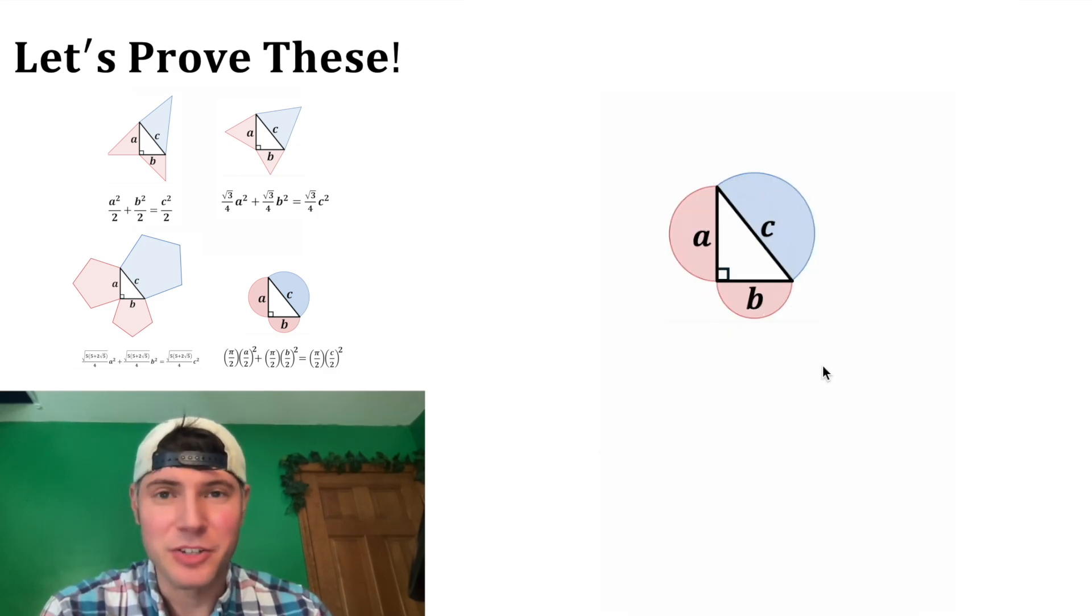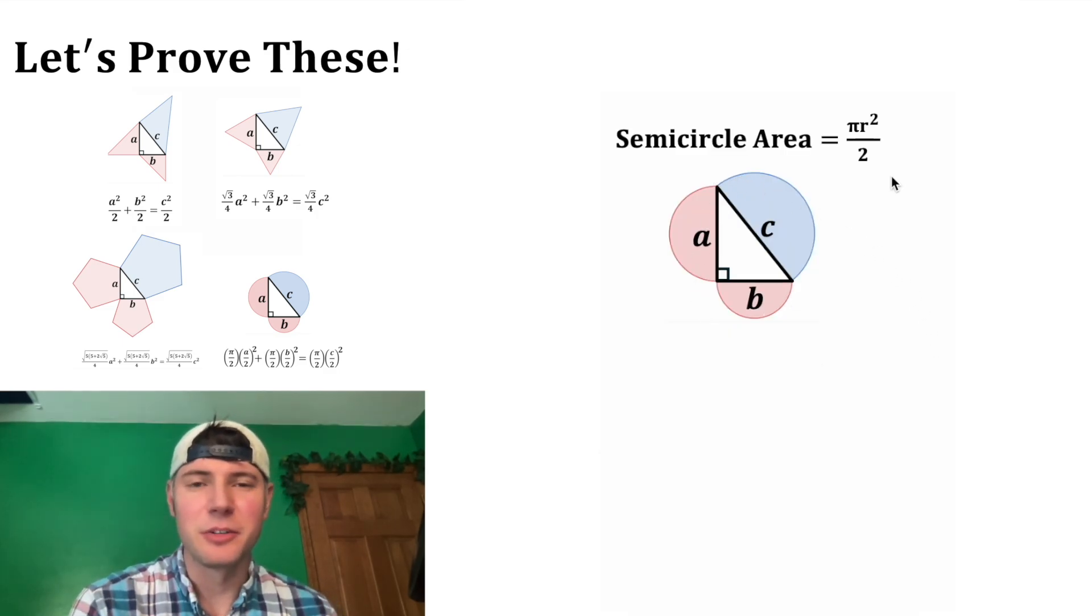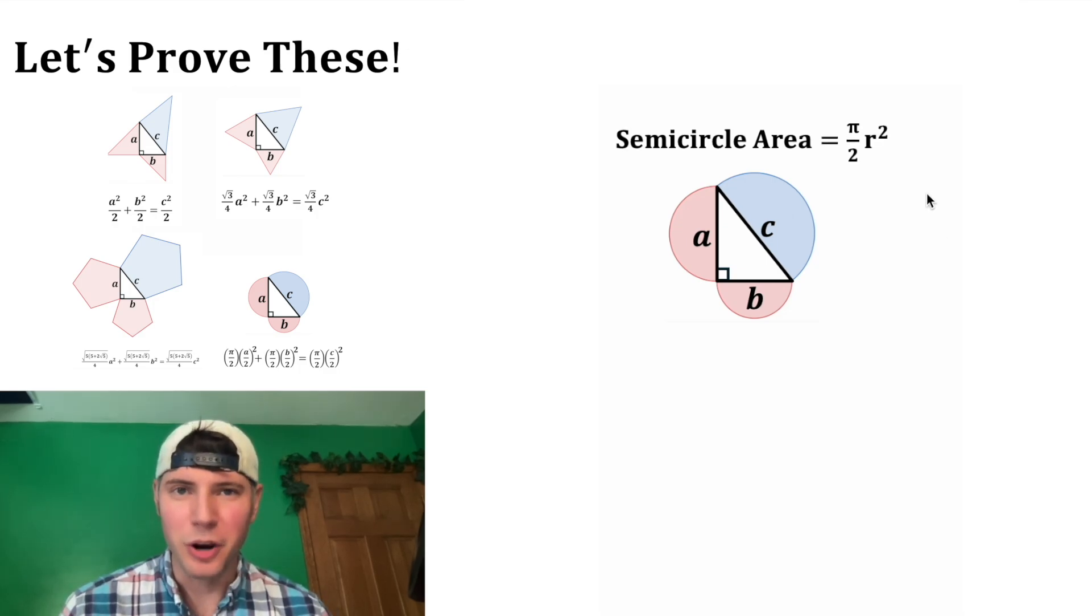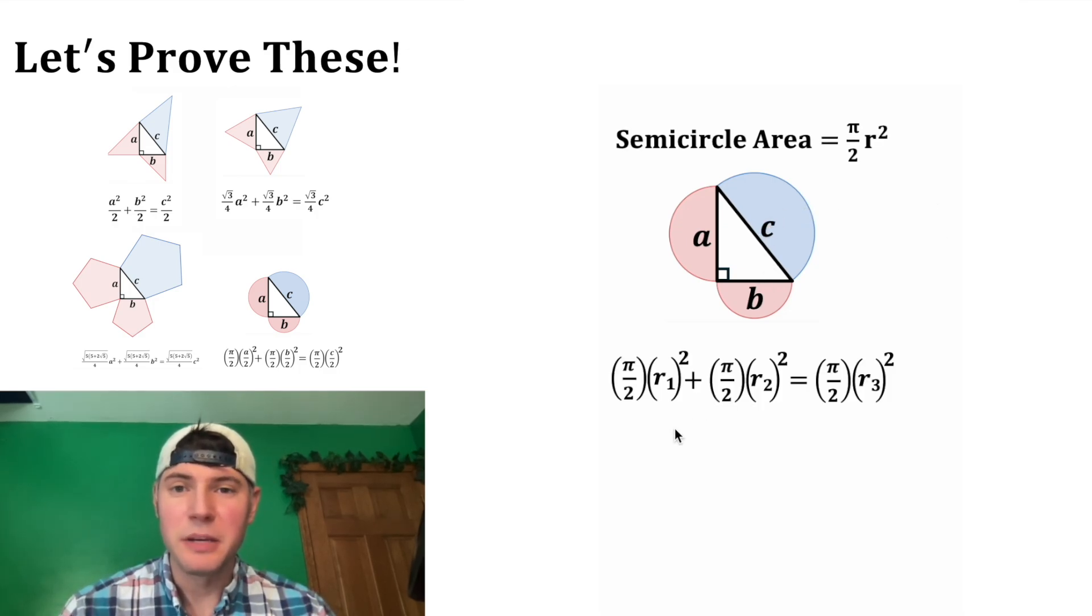The next interesting one is semicircles. The area of a semicircle is equal to pi r squared divided by 2. Or you can rewrite that as pi over 2 r squared. So this would end up being pi over 2 r squared plus pi over 2 r squared equals pi over 2 r squared.